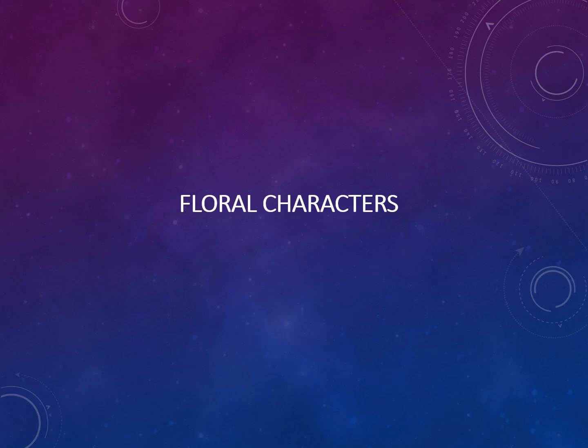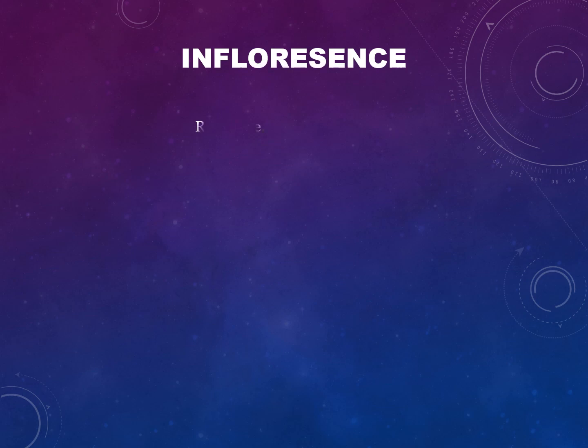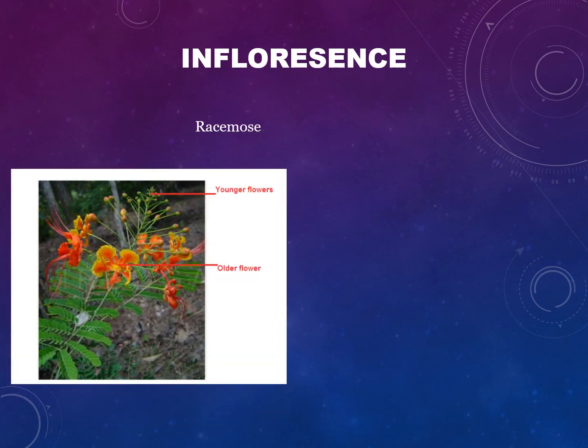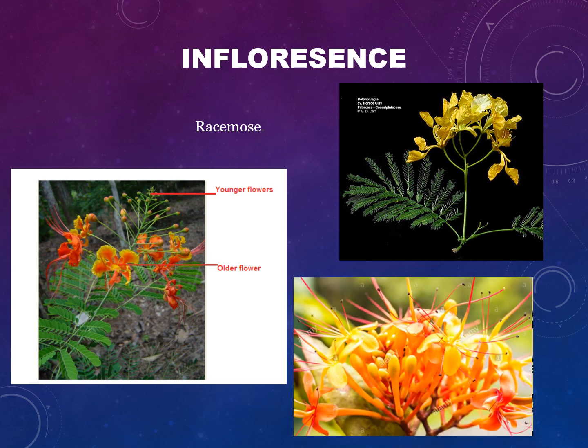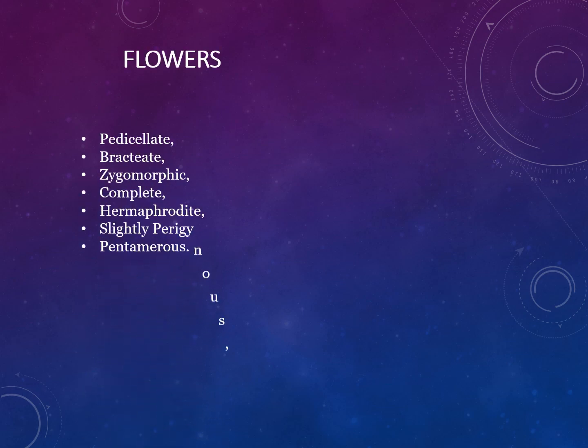Now let's discuss the floral characters of the family Caesalpinaceae. Inflorescence: racemose inflorescence, in which younger flowers are borne on the upper side of the peduncle, while the older flowers are borne on the lower side of the peduncle. Flowers are pedicellate, having a stalk with flowers; bracteate, having bracts — bracts are present outside of the calyx.